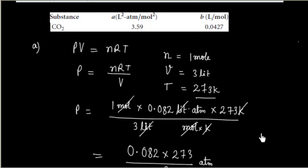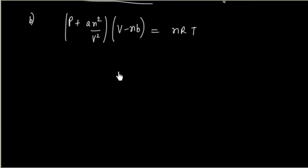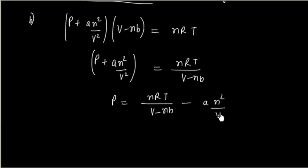Let us do the same problem, this time using Van der Waals equation. If I apply Van der Waals equation, we have P plus A n squared by V squared, times V minus nb, equals nRT. Number of mol is given, so we can solve for pressure. Pressure is nRT divided by V minus nb, minus A n squared by V squared.